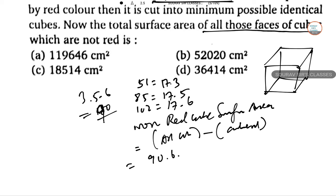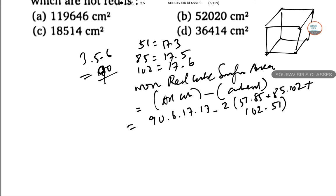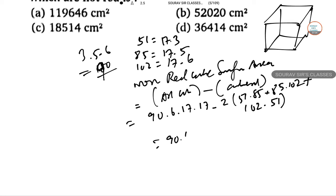So this is 90 into 6 into 17 into 17, minus 2 into 51 into 85, 85 into 102, 102 into 51. So 90 into 6 into 289, minus 2 into this will be 15, 30 and 18.